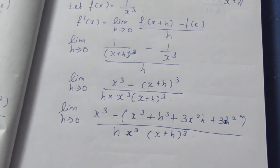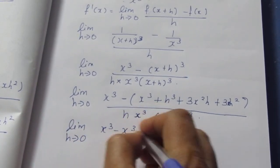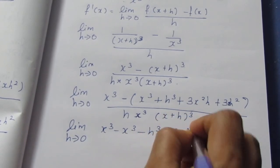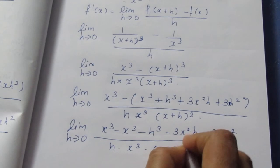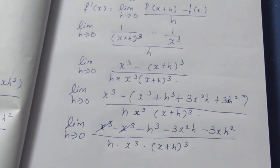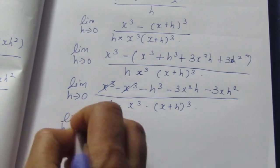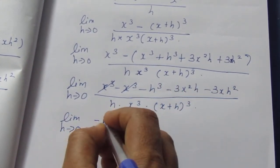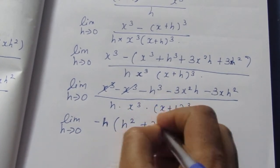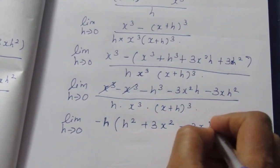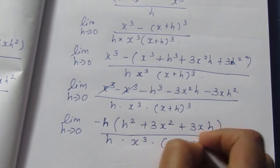Using the a plus b all cube formula: x cube minus sign — x cube plus h cube plus 3x squared h plus 3xh squared — by h into x cube into (x plus h) whole cube. After applying the minus sign and expanding: limit h tends to 0 of x cube minus x cube minus h cube minus 3x squared h minus 3xh squared, divided by h into x cube into (x plus h) whole cube. The x cube and minus x cube cancel.